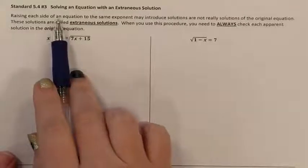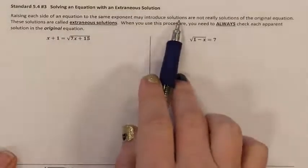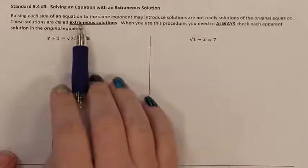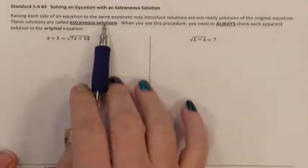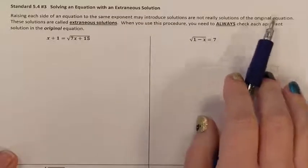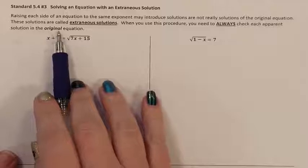Raising each side of the equation to the same exponent may introduce solutions that are not really solutions to the original equation. These are called extraneous solutions. When you use this procedure, you need to always check each apparent solution in the original equation.